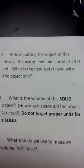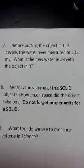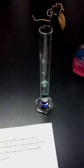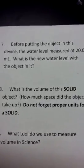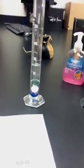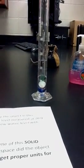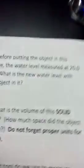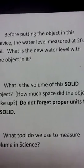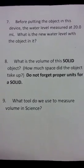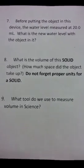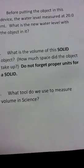Question number seven: before putting the object in this device, the water level measured at 20.0 milliliters. What is the new water level with the object in it? Let's figure out the new water level on this device. Don't forget, try to use three significant digits and proper units. Question number eight: what is the volume of this solid object — how much space did the object take up? Do not forget proper units for a solid object.